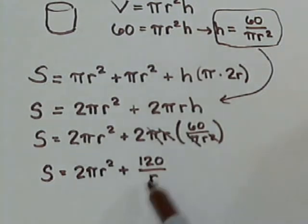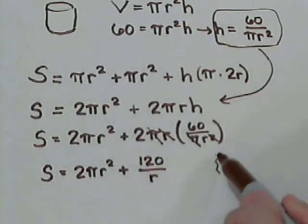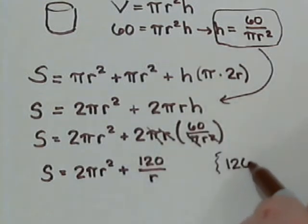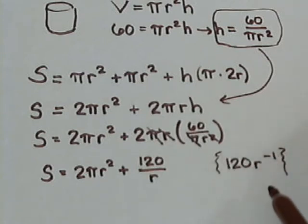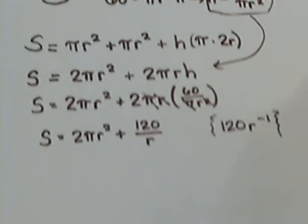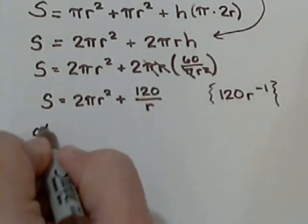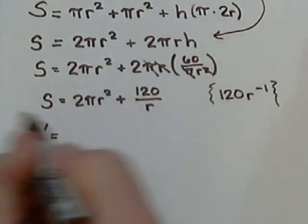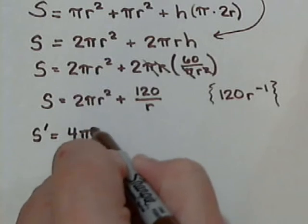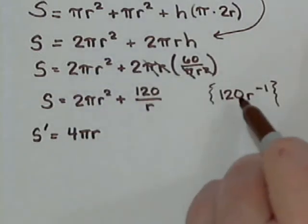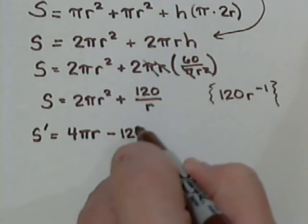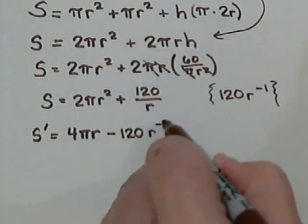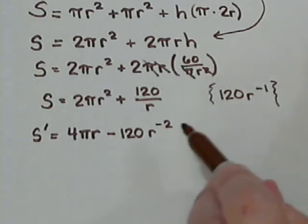Now before we take the derivative so we can find the critical point, let's just come over here and remember that 120 divided by r could be written as 120 r to the minus 1. We put it in this form. Now we've got an exponent. We can use the power rule. So derivative. The derivative of the surface area is 2 times 2, so 4 pi r. Now if we think of this as 120 r to the minus 1, we bring the minus 1 out. So that gives us minus 120 r to the minus 2. We subtract 1 from the exponent. That gives us minus 2.